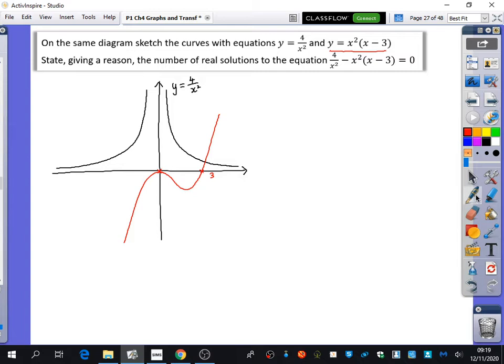But then it says, state giving a reason the number of real solutions to the equation that they've got written here. And the equation that they've got written here is 4 over x squared minus x squared x minus 3 equals 0. Well, where does that equation come from? How does that equation link to the two equations that they had written on the board? They've been made equal to each other. So this equation, if I rearrange this, I have 4 over x squared equals x squared x minus 3.